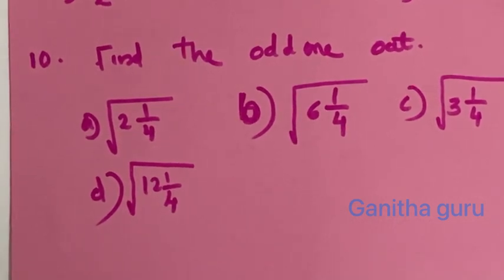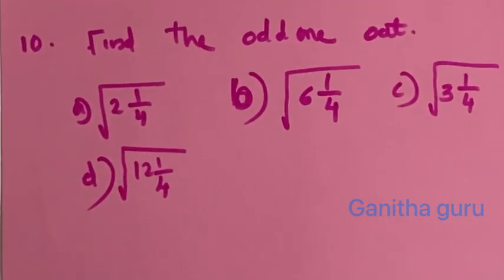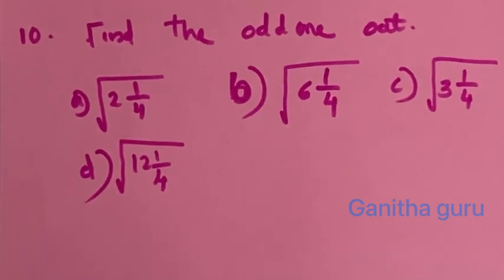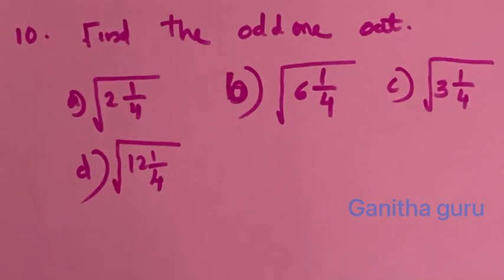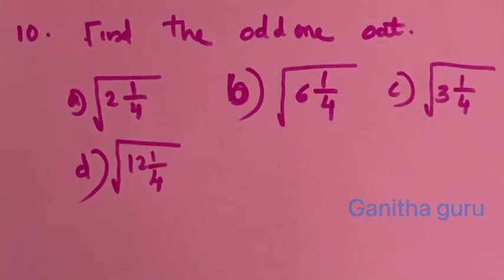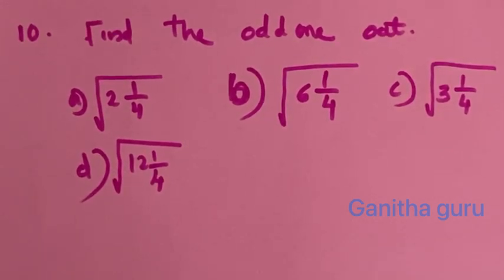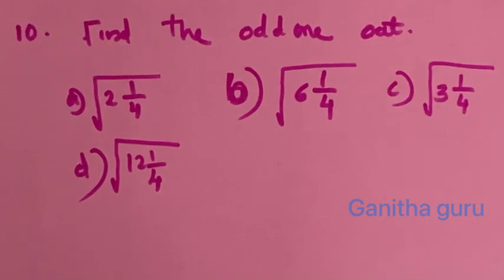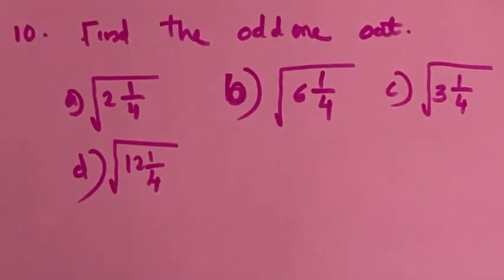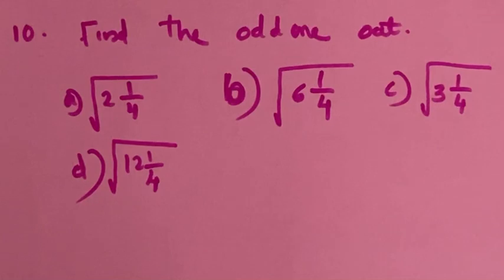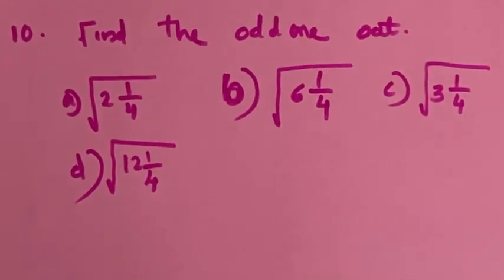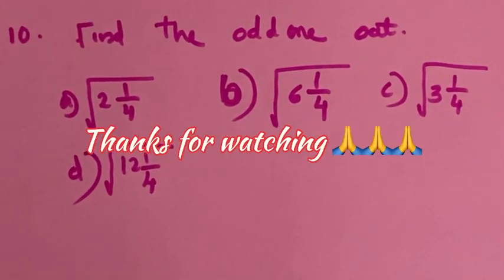We convert to improper fractions: option A is 9/4, option B is 25/4, option C is 13/4, option D is 49/4. Now 9/4 and 25/4 and 49/4 are perfect squares, but option C — 13/4 — is not a perfect square. So option C is the answer.